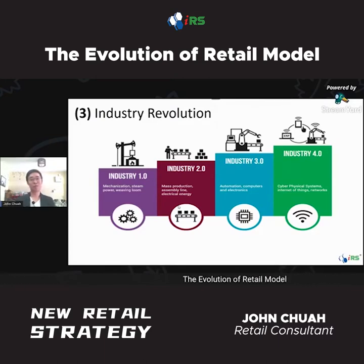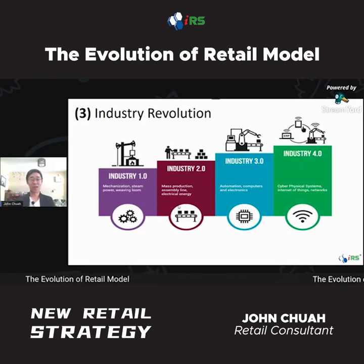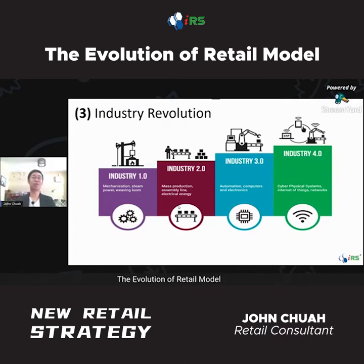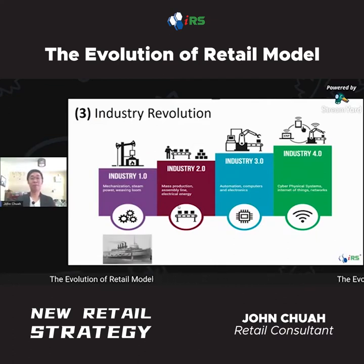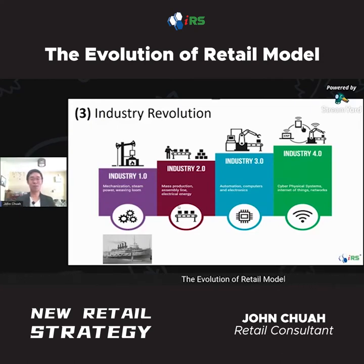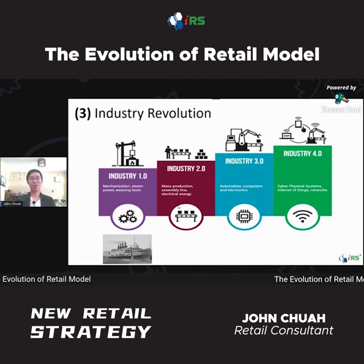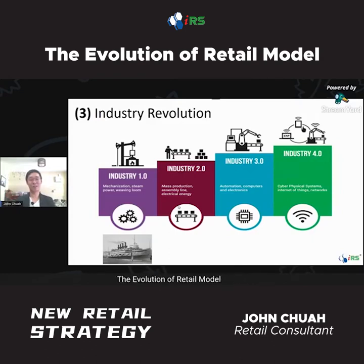Industry 1.0: previously, people traveled by small boat, and the direction depended on the wind. But during Industry 1.0, they invented steam power and came up with the steamboat or steam ship, which replaced the traditional boat. Industry 2.0: people were using horse carriages, and during this period they invented electrical energy and came up with the car, which replaced the horse carriage.